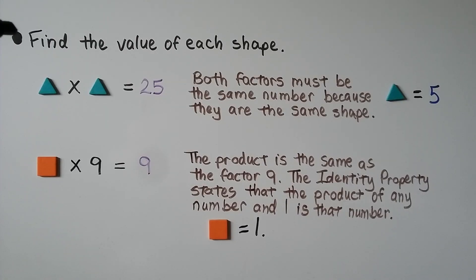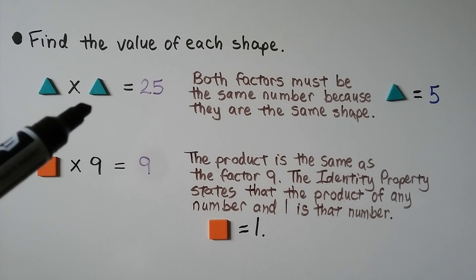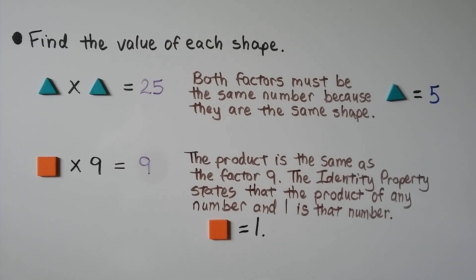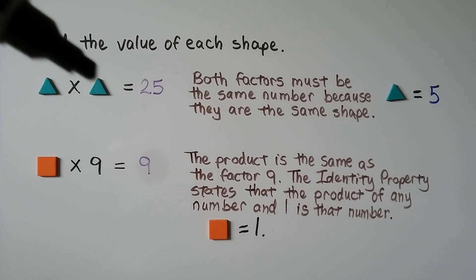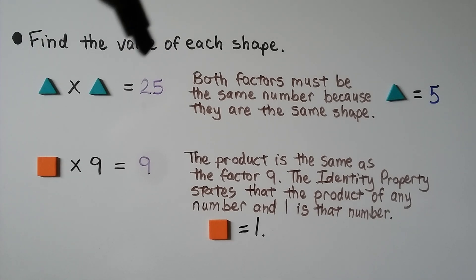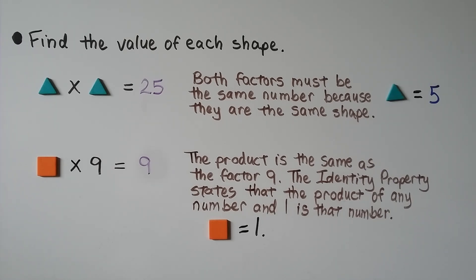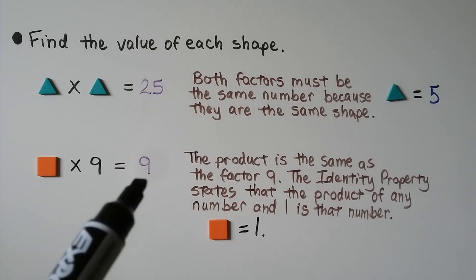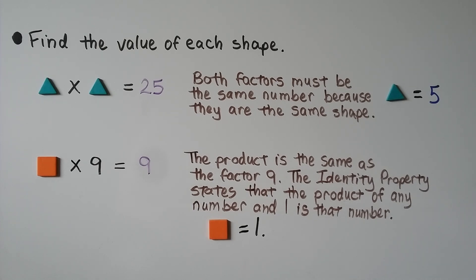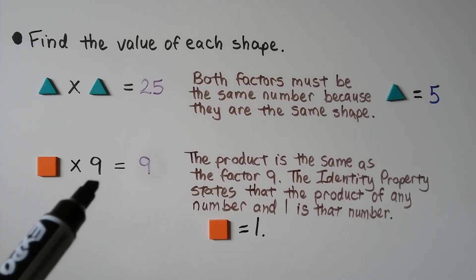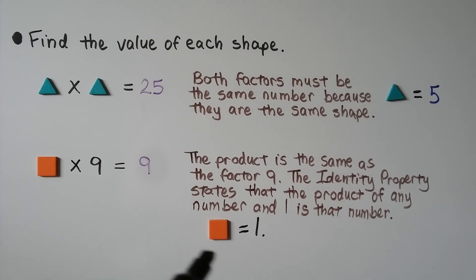It says to find the value of each shape. We have a green triangle times a green triangle equal to 25. Both factors must be the same number because they're the same shape. Some number times itself equals 25 — if you remember your 5 times table, 5 times 5 is equal to 25, so the green triangle equals 5. For the next one, an orange square times 9 is equal to 9. The product is the same as the factor 9. The identity property states that the product of any number and 1 is that number, so the missing factor must be 1. The orange square equals 1.